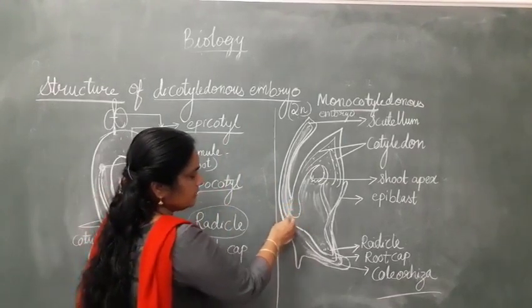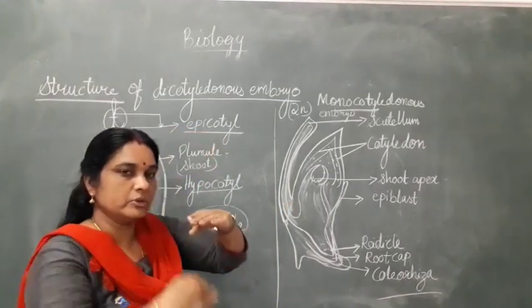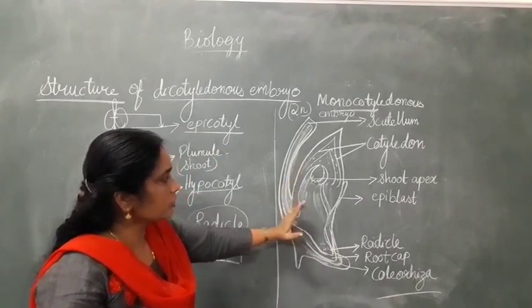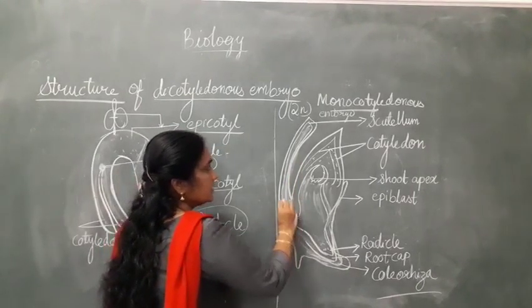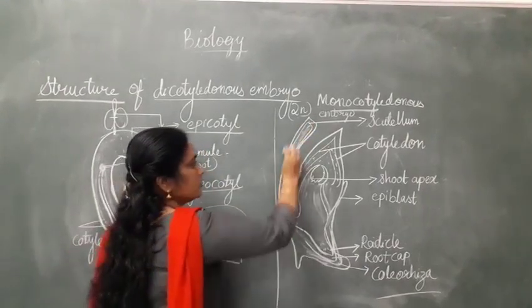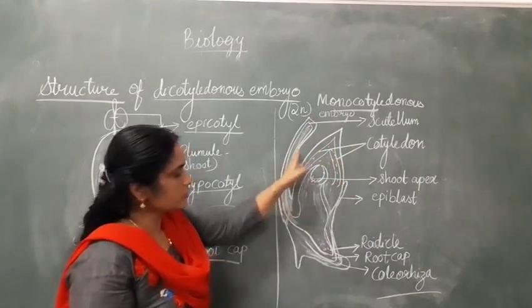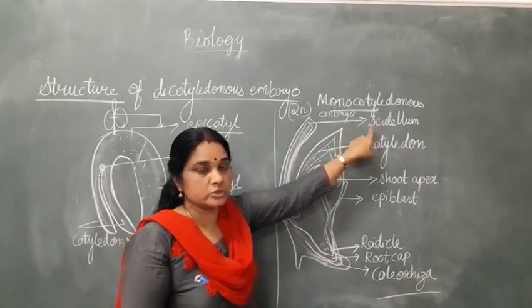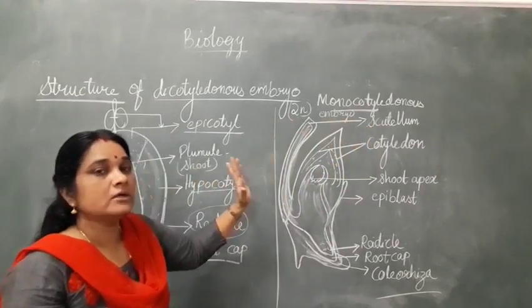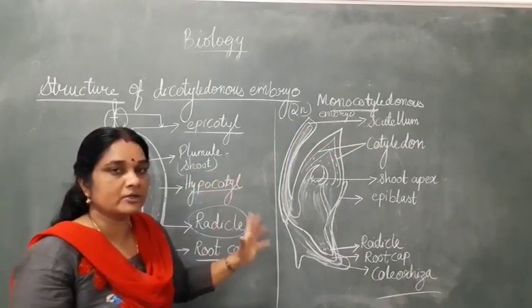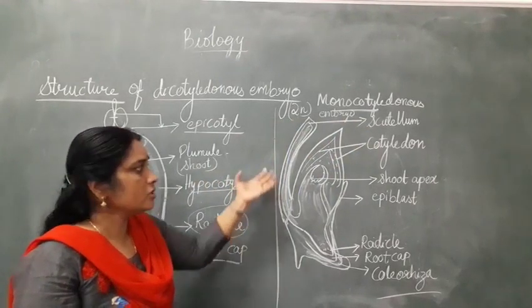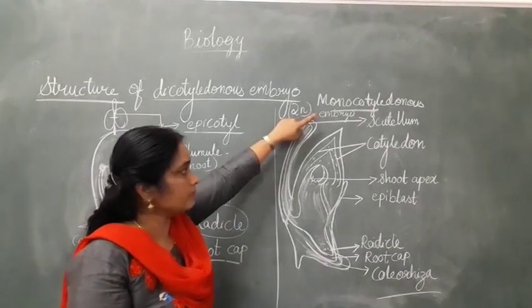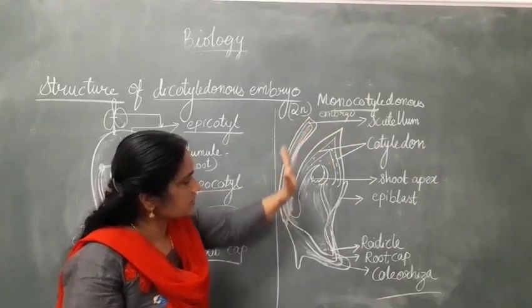Here is the embryonal axis: above is the shoot system and below the root system is formed. In the case of the monocotyledonous embryo, the cotyledon grows on the lateral side of the plumule — it grows on the lateral side. The cotyledon of a monocot is known as the scutellum. The scutellum is the cotyledon, and the purpose of the cotyledon is to provide nourishment — it stores food, lipids, proteins — giving nourishment to the growing embryo. So the cotyledon of a monocot seed is known as the scutellum, found as a shield-like growth on the side.